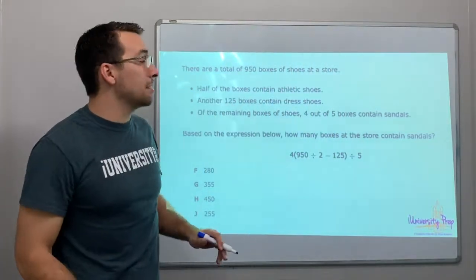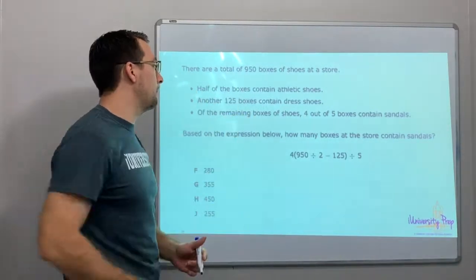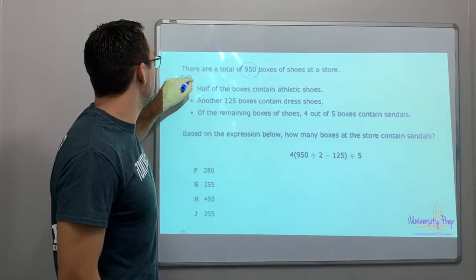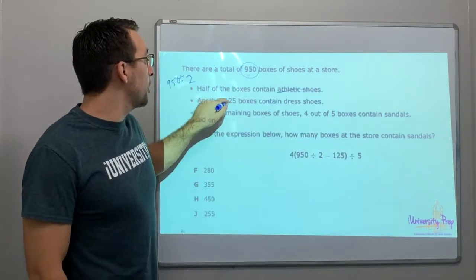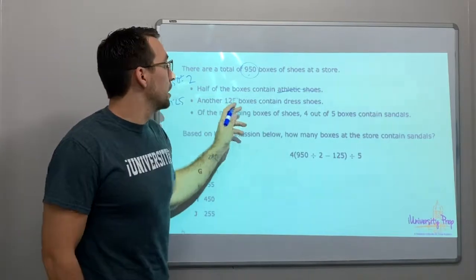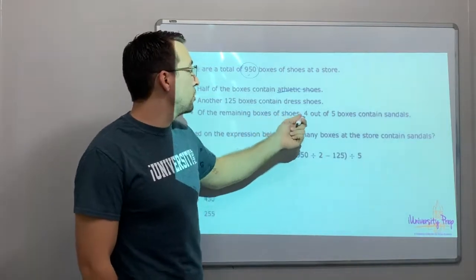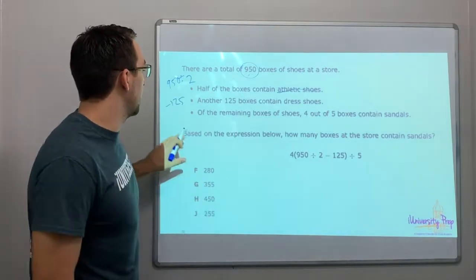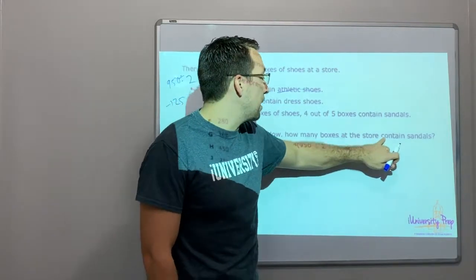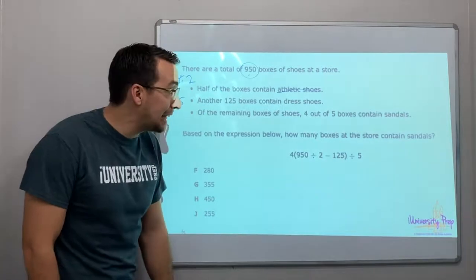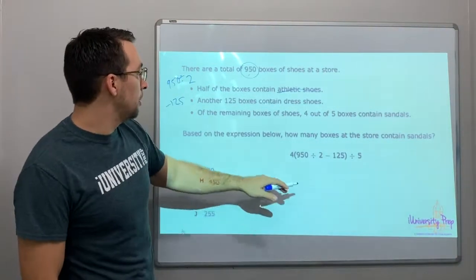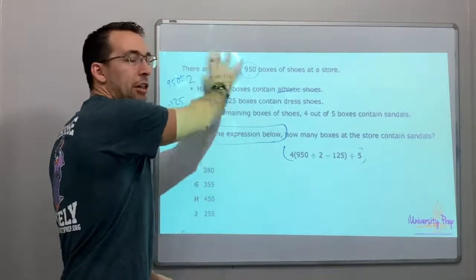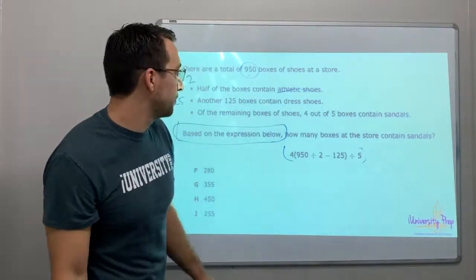There are nine hundred fifty boxes at a shoe store. Take a deep breath, one line at a time. Half of the boxes contain athletic shoes — nine hundred fifty divided by two. Another one hundred twenty-five contains dress shoes. Of the remaining boxes of shoes, four out of five contain sandals. Based on the expression below, how many boxes at the store contain sandals? Just solve the given expression and you get the answer.